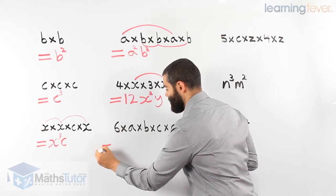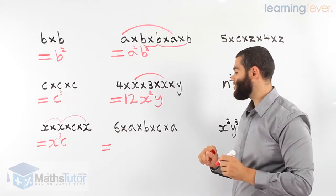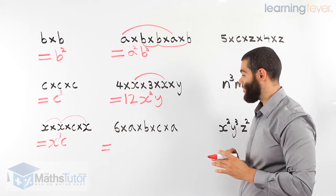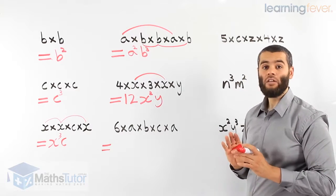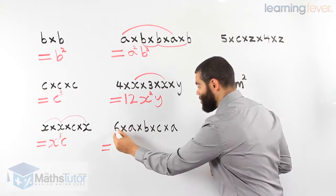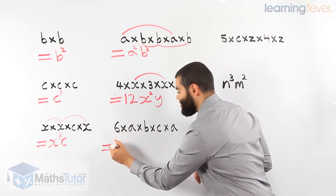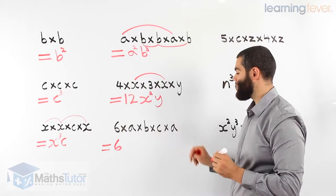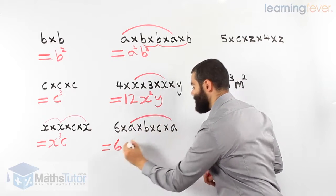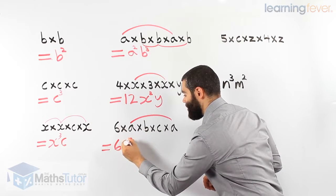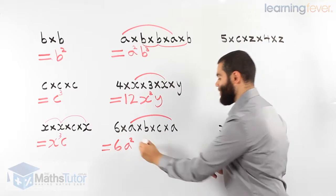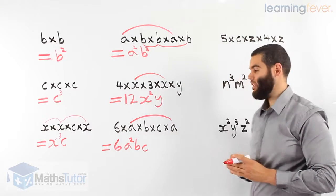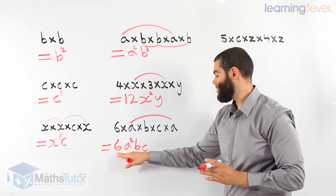Here we have 6 times a times b times c times a. Again, it's pretty long. We like to shorten it and make it simpler. We have a numeral, which is 6. Does it multiply with any other numeral? No, there isn't any other numeral, so just 6. Then a times b times c times a — we notice that a times a is a squared, and bc. So 6a squared bc in index notation.